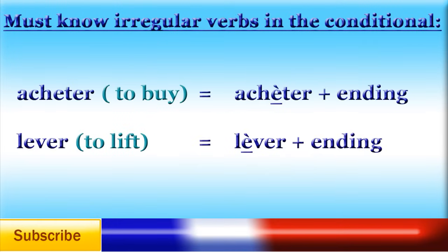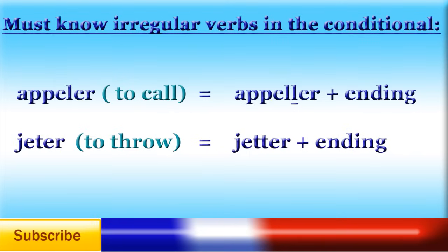Here is a list of must-know irregular verbs in the conditional. The stem for 'acheter' is 'achèter-'; for 'lever,' it is 'lèver-' — the only irregularity here is the accent on the first E. The stem for 'appeler' is 'appeller-' — you need to add an L to the stem. And the stem for 'jeter' is 'jetter-' — here you need to add a T to the stem.